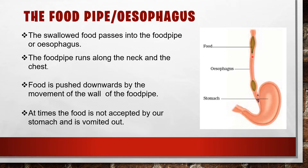At times the food is not accepted by our stomach and is vomited out. Sometimes the stomach is not ready to accept the food, so the food moves upwards and we vomit. To summarize: solid food passes into the food pipe or esophagus; the food pipe runs along the neck and the chest; food is pushed downwards by the movement of the wall of the food pipe; at times the food is not accepted by the stomach and is vomited out.